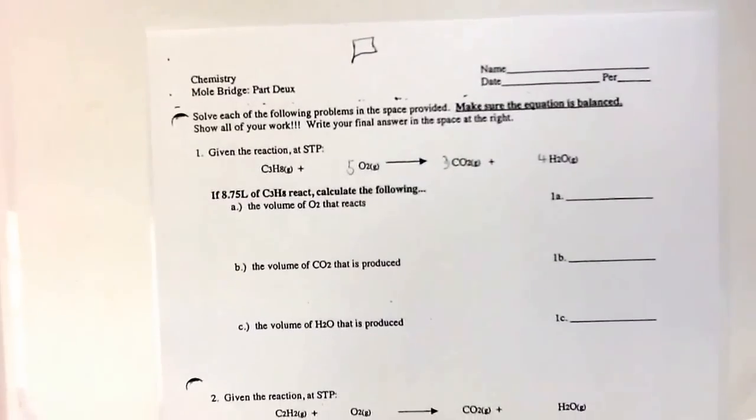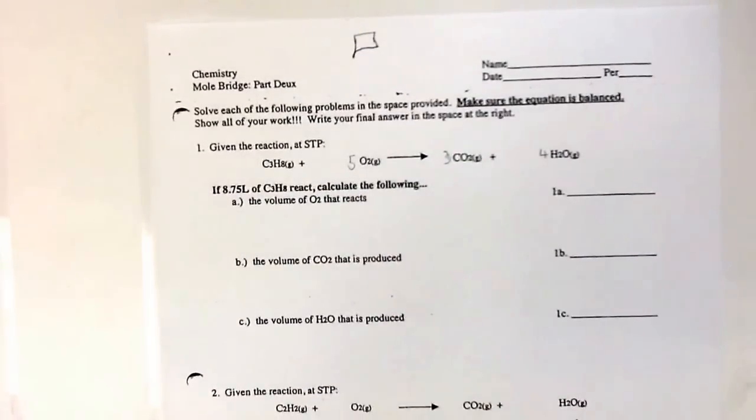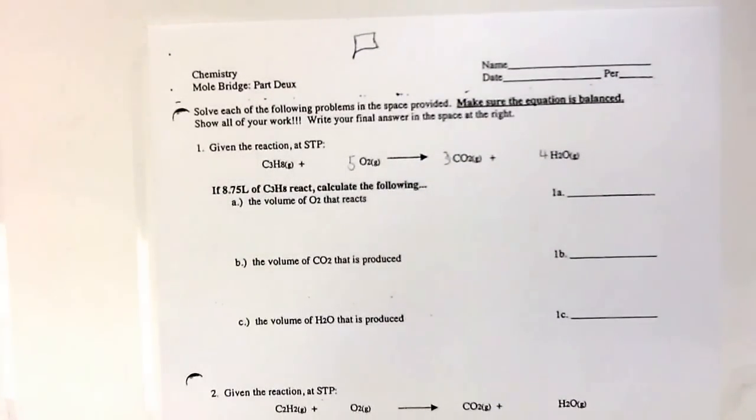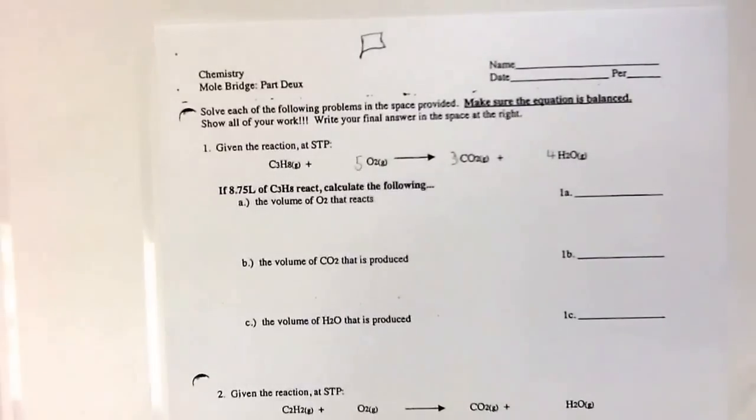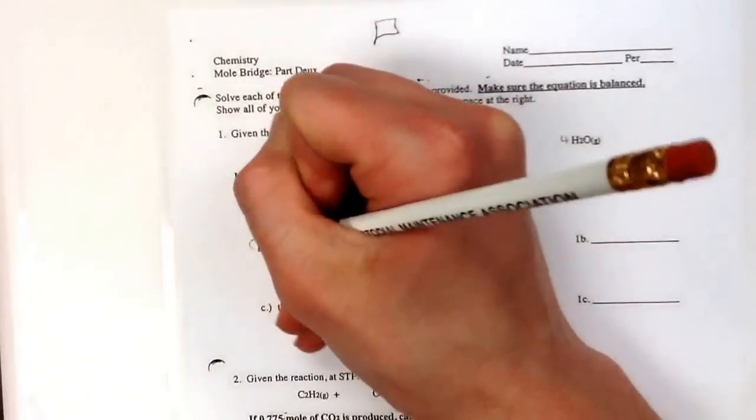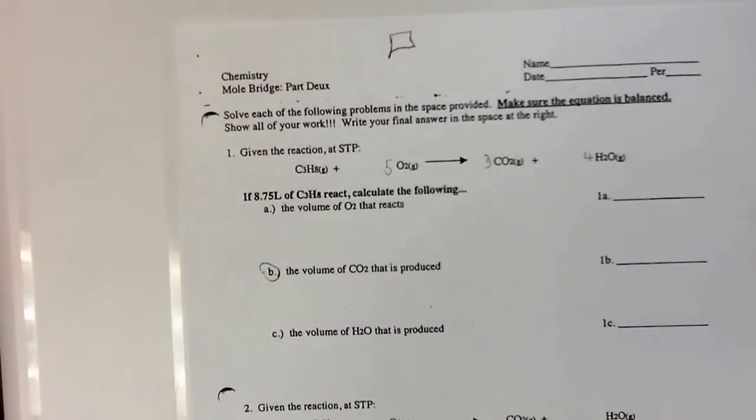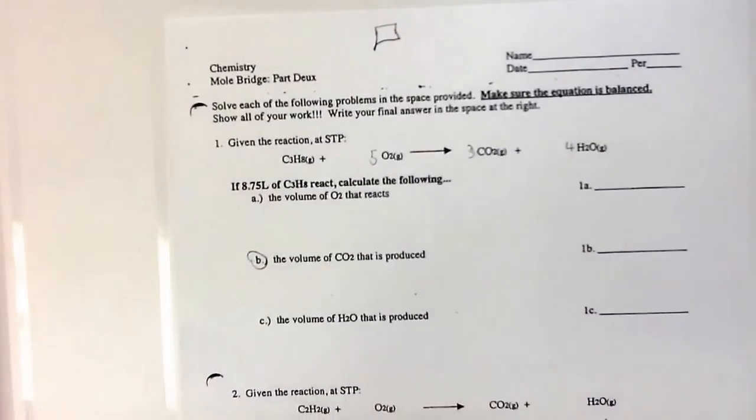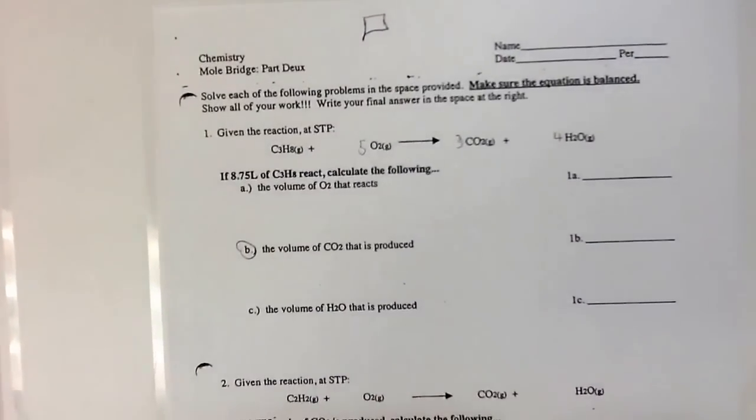So now that we have our equation balanced, we're looking at A, B, and C. We're just going to choose to do one of them, since they're all kind of the same. So I'm going to do B. It says, if 8.75 liters of C3H8 react, calculate the following. And if we're doing B, which is this one, we want to find the volume of CO2. So I start by writing down the number that's provided in the problem, which is 8.75 liters.